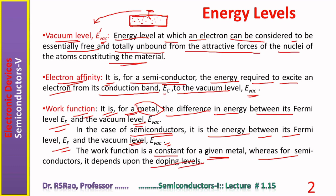Work function is a constant for a given metal, whereas for semiconductors it depends upon the doping levels. Vacuum level energy is the minimum energy required by an electron to become free and come out of the surface of the material. Electron affinity and work function are both defined with respect to vacuum level energy.